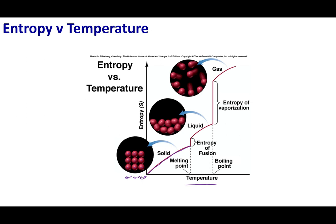Remember, during a phase change — solid to liquid or liquid to gas — temperature doesn't change; it is isothermal. Entropy increases as I go from solid to liquid because a liquid has more disorder. Then heating the liquid increases kinetic energy and disorder until I hit the next phase change. Going from liquid to gas causes a huge jump in entropy because a gas is a very chaotic substance. After that, heating the gas continues to increase entropy.